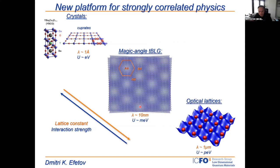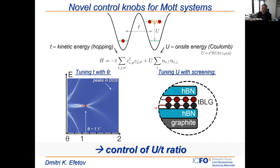Coming back to the Hubbard model analogy: all the parameters T and U are not fixed in our problem. T is a tunable parameter — T is a function of twist angle. At the magic angle, T is at its minimum. When we go slightly away from the magic angle, T becomes much bigger: for a 1.2 degree twisted bilayer graphene device, the bandwidth is already 10 times bigger. So we can accurately control T by slightly changing the twist angle.